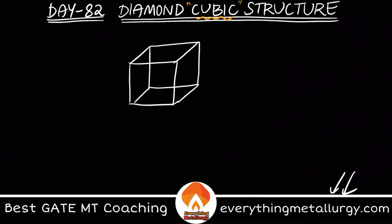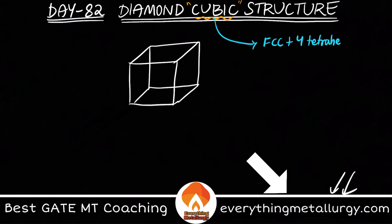To easily memorize, you can see this diamond cubic structure as an FCC plus half of the tetrahedral voids filled. In FCC you usually have 8 tetrahedral voids, so half of them — that means 4 tetrahedral voids — are filled.